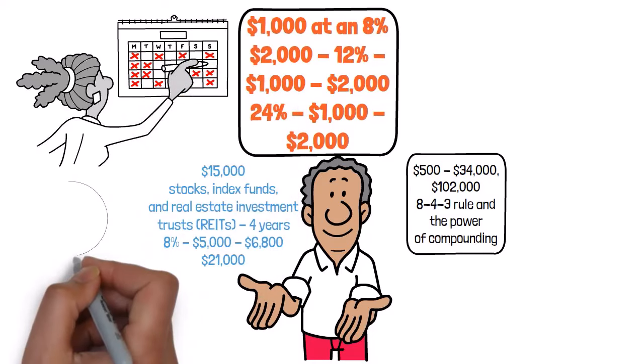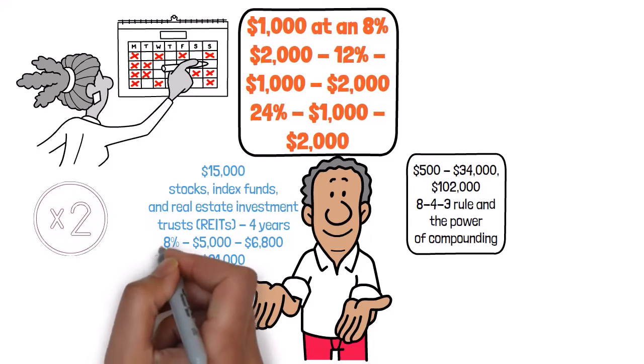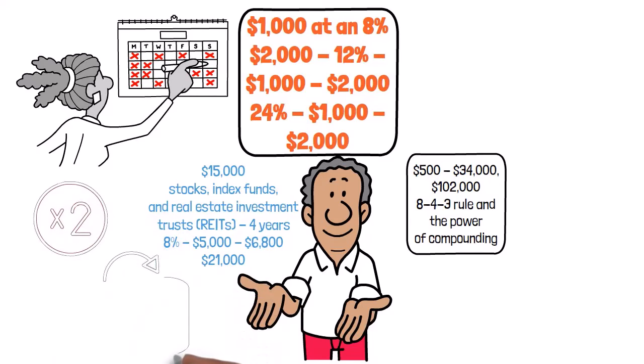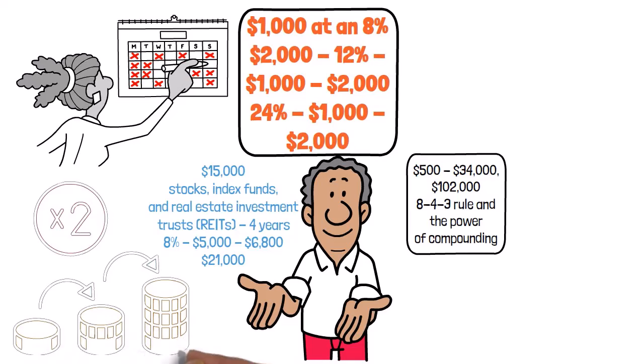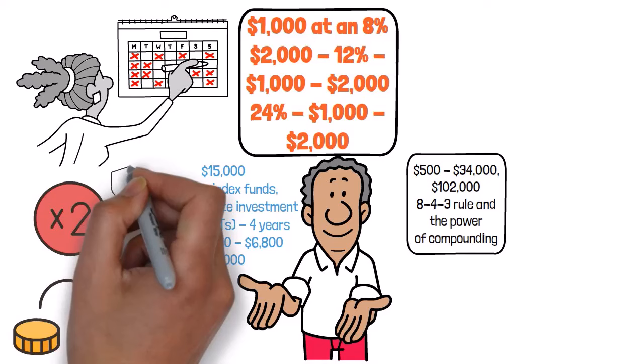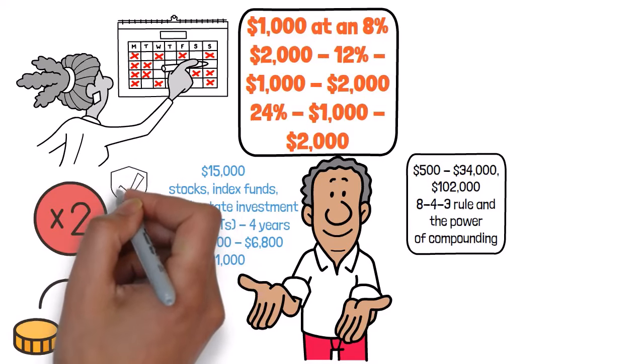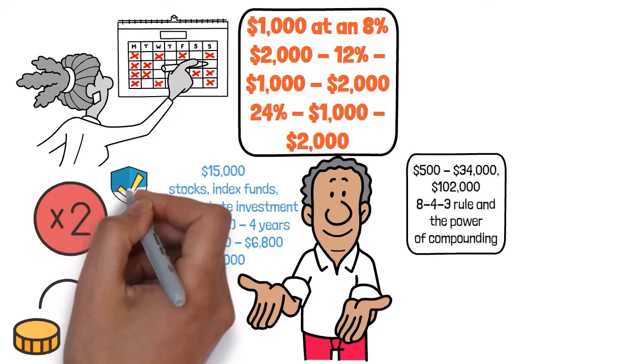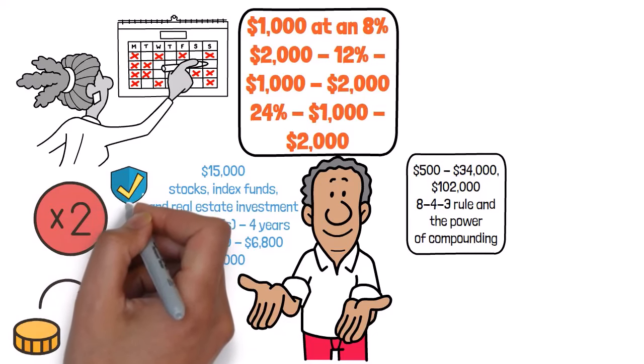Let's break down what this whole compounding business is about. You invest some cash, and over time, that money starts earning interest. But the interest doesn't just sit there. It gets reinvested along with your initial investment, and then it starts earning interest of its own. So we can say that it's all about maximizing your returns over the long haul. Sure, you may not see massive gains overnight, but over time, those small returns can add up. The best part is that you don't have to do anything fancy. Just sit back, relax, and let compounding do its thing.